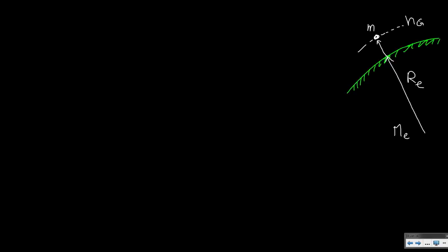For this we will first look at the law of gravity itself. On the right side of the screen we see the earth with the radius Re and the mass of the earth indicated as Me, and we are a certain mass m flying at the geometric altitude hg. The general law of gravity is written as Fg equals the gravity constant times one mass times the second mass divided by the distance squared.